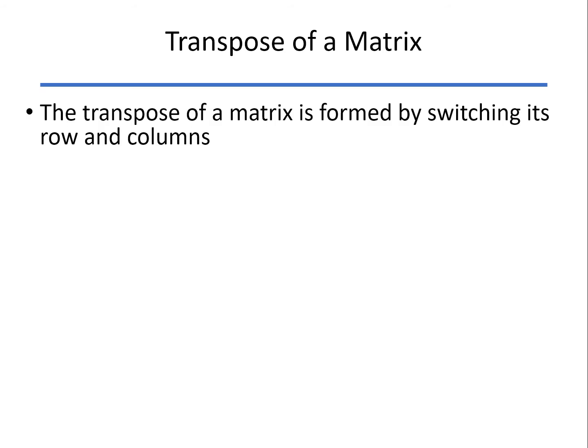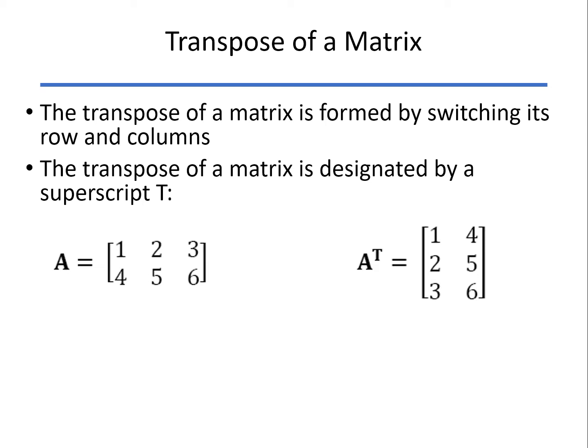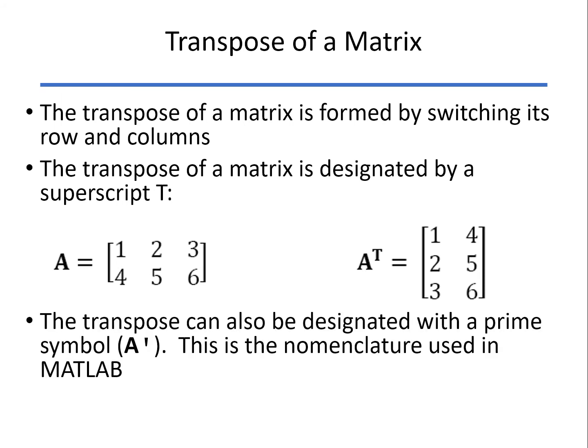Finding the transpose simply means you're switching the rows and the columns. For matrix A on the left, the transpose of that is shown on the right. The first row becomes the first column, etc. You can also, in MATLAB, use the prime symbol. In general, the superscript T or prime means that that's a transpose.